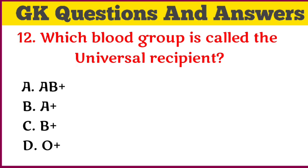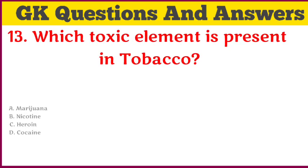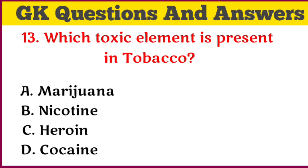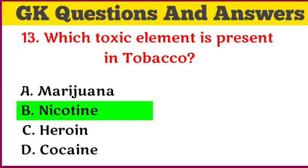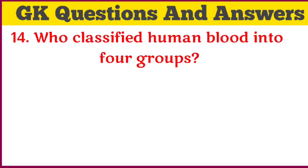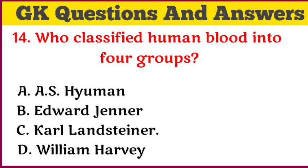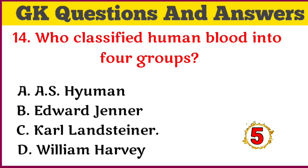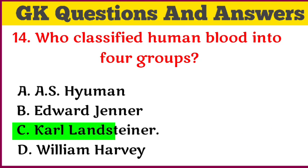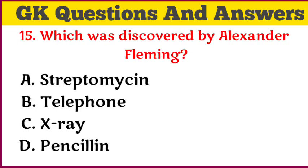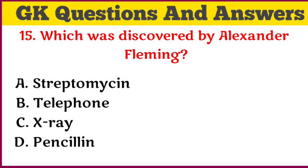Answer: 14 bones. Which blood group is called the universal recipient? Answer: AB positive. Which toxic element is present in tobacco? Answer: nicotine. Who classified human blood into four groups?